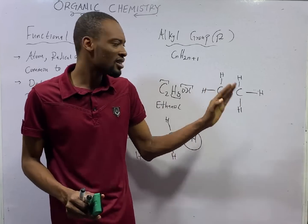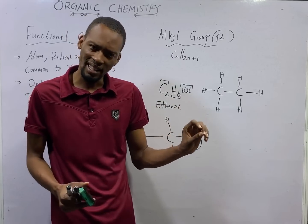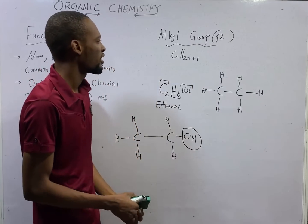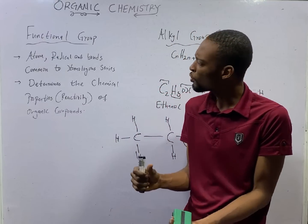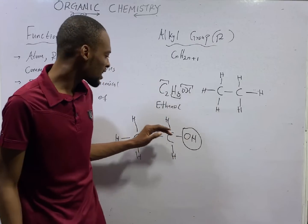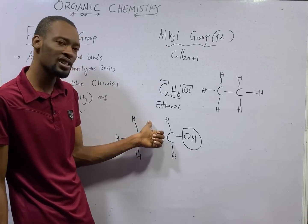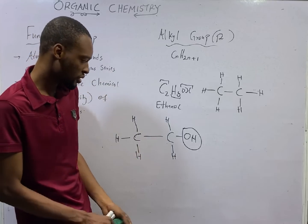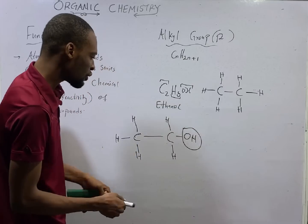All alkanes must have carbon with single bonds to hydrogen — no other elements. These are alkanes. Although there can be substitution of alkanes. Now, going back to homologous series: we said that each member of a homologous series differs by a CH2 group. If this is an alkanol, the next member will definitely have one more carbon and two more hydrogens than this member.